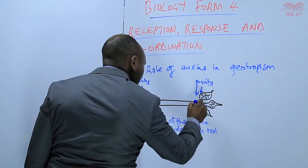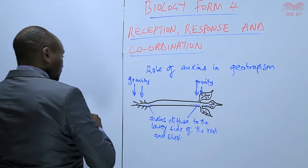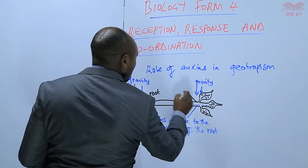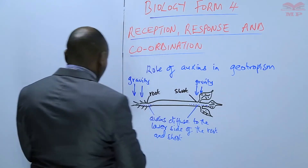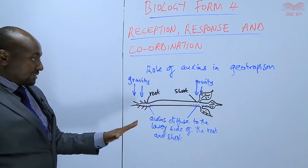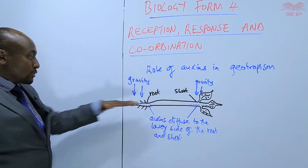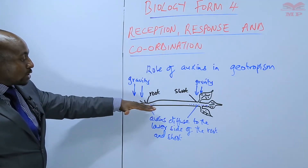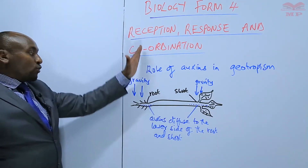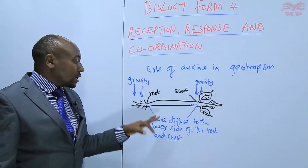So for both cases we have the root on one side and the shoot on the other. This is at the beginning. If you leave that seedling for a few days while it is growing in that position, we are saying the auxins will be on the lower side of both the root and shoot because of the effect of gravity acting downwards.